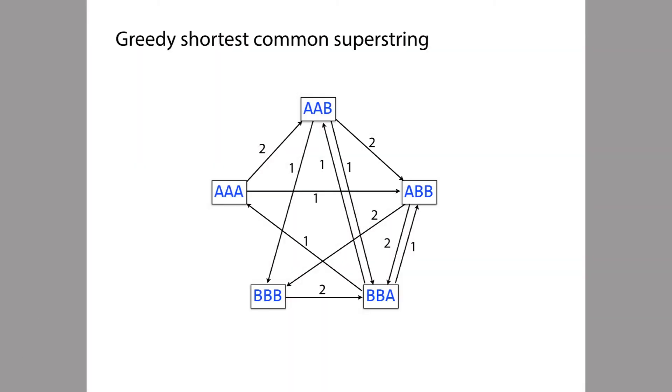The principle behind the greedy shortest common superstring algorithm is that we're going to proceed in rounds, and in each round, we're going to pick the edge that represents the longest remaining overlap in the graph. In other words, we're going to pick the edge that has the greatest number as its label, and then we're going to merge the nodes on either side of that edge. Picking the longest overlap seems to make sense because the longer the overlaps between the strings, the shorter the final string will be. We're going to always pick the longest overlap, trying to get to the shortest superstring.